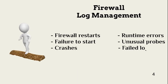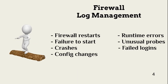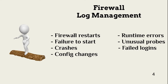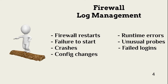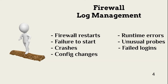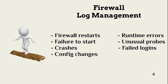In addition to using firewalls as a security safeguard, additional safeguards must protect the firewalls themselves. One of the most important safeguards is log management and log review. Firewall logs can alert security that a threat actor is attempting bypass or has already done so. The CISSP common body of knowledge lists the following as things to look for in firewall logs: firewall restarts, failure to start, crashes, changes to the configuration file, runtime configuration or system errors, unusual probes against the firewall, and unsuccessful logins.